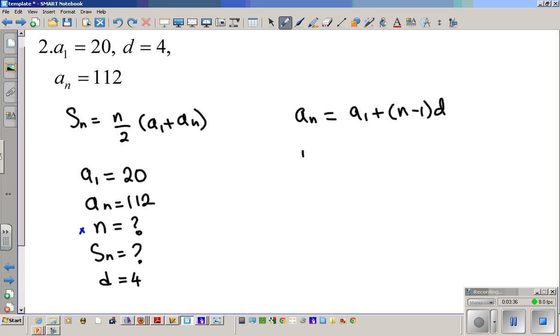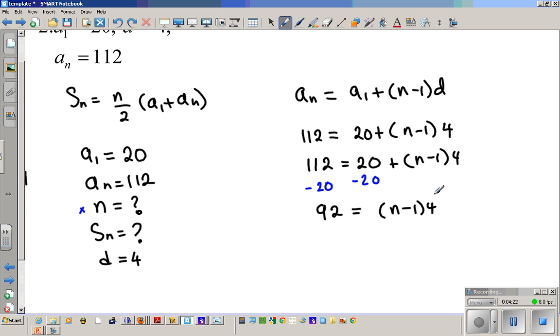For this formula, I need to find N. We know what AN is, we know what A1 is, and we know what D is. So let's plug it in here. We're going to have 112 equals A1 is 20, plus N is an unknown, minus 1 times the common difference of 4. So we have 112 equals 20 plus N minus 1 times 4. I can subtract 20 from both sides first. And then you have 92 equals N minus 1 times 4. I just want to divide by 4.